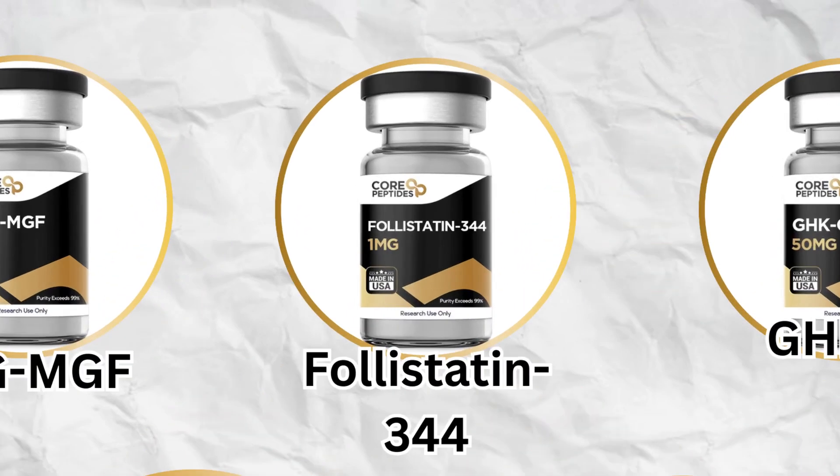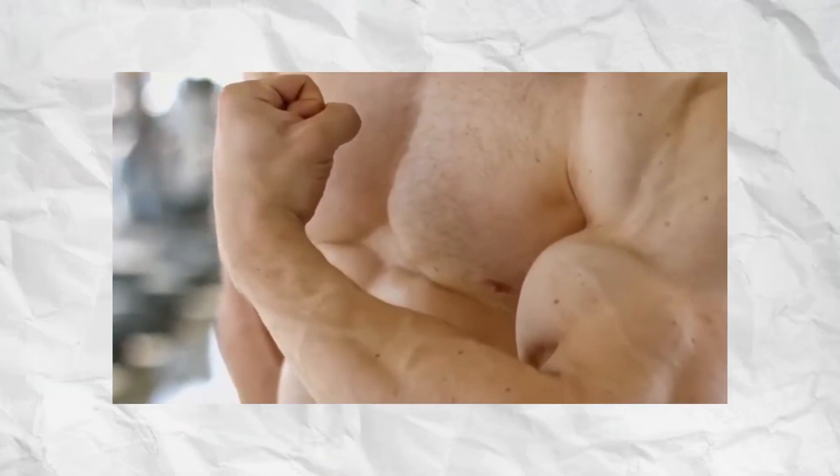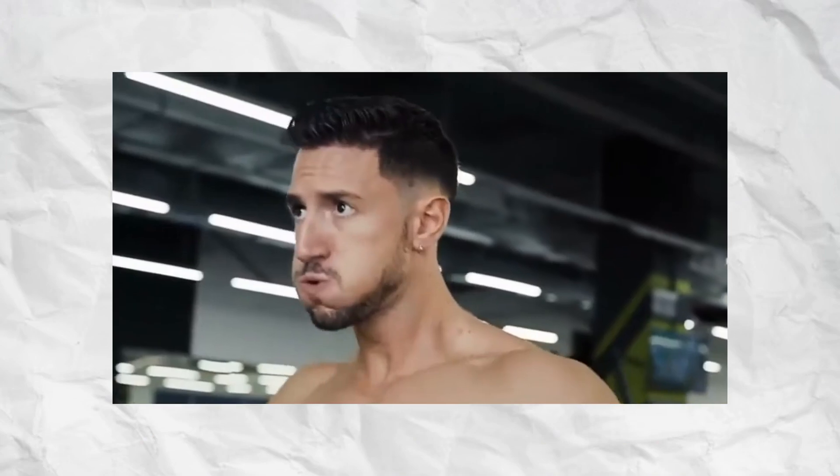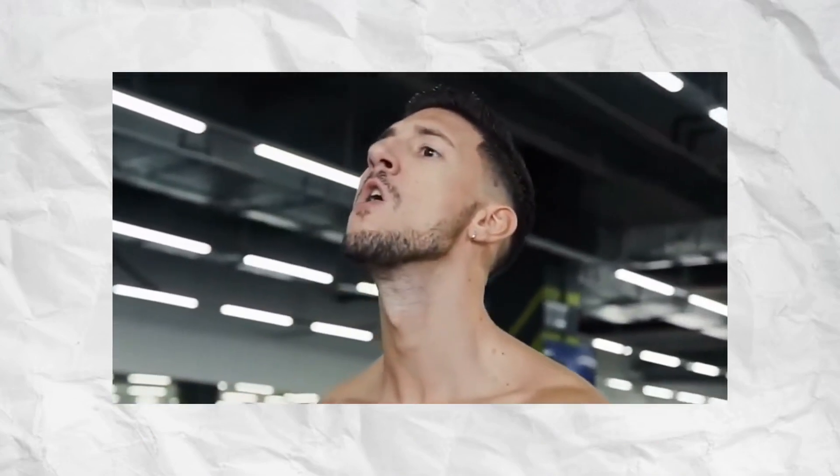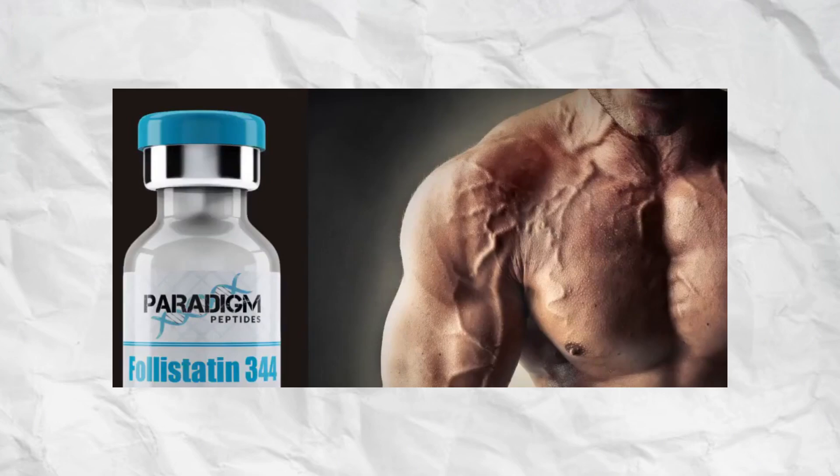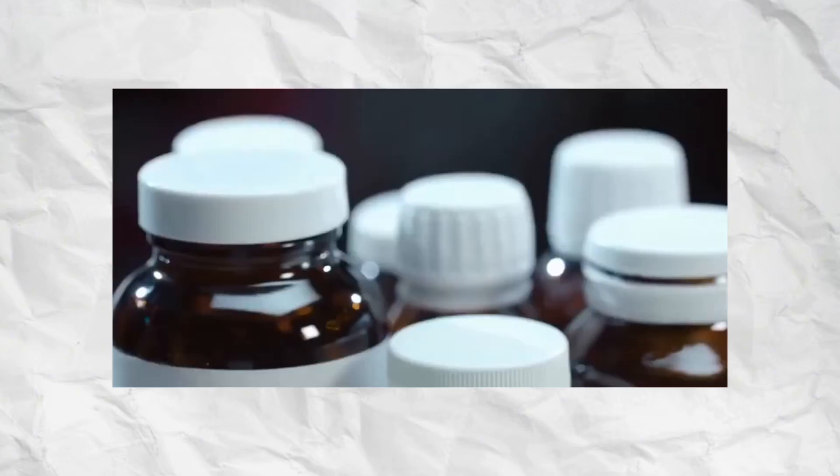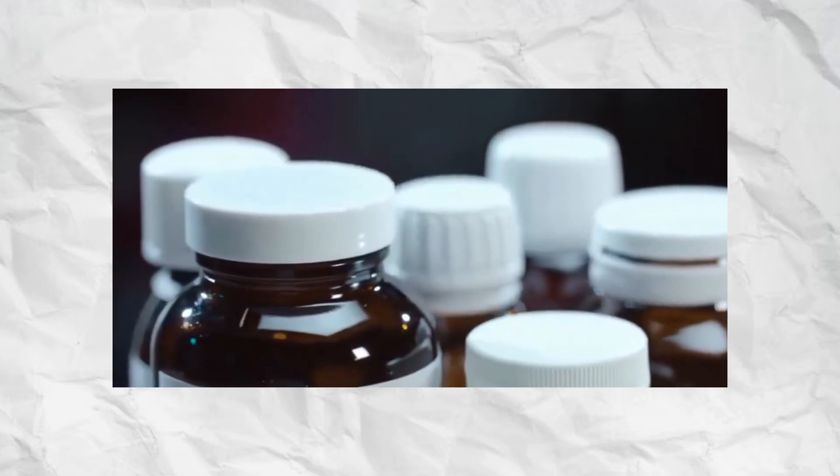Follistatin 344 is a naturally occurring protein-based peptide that binds to and inhibits myostatin, a growth-limiting molecule that prevents excessive muscle development. By blocking myostatin's action, follistatin 344 removes the body's natural restriction on muscle growth, allowing satellite cells to proliferate and muscle fibers to enlarge rapidly. It also modulates other members of the TGF-beta family, influencing tissue repair and cell differentiation.